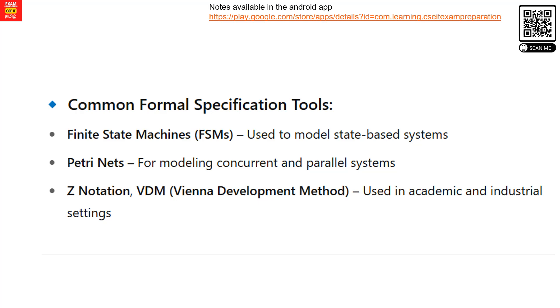Common formal specification tools include Finite State Machines, Petri Nets, and Z Notation. We will now look at Finite State Machines and Petri Nets in detail.